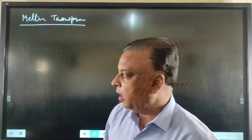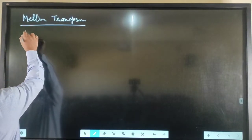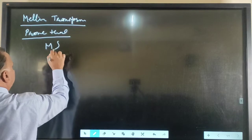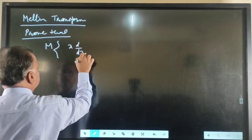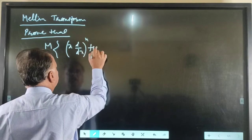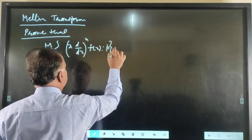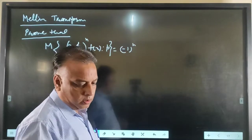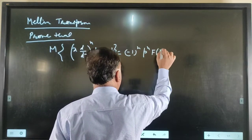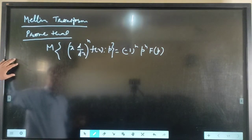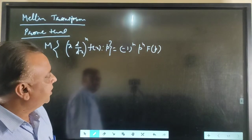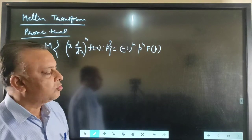One of the properties we have to find is the Mellin Transform of the function (x d/dx)^n f(x) with respect to p. This is equal to (-1)^n p^n F(p). We have to prove that the Mellin Transform of (x d/dx)^n f(x) with respect to p equals (-1)^n p^n F(p).